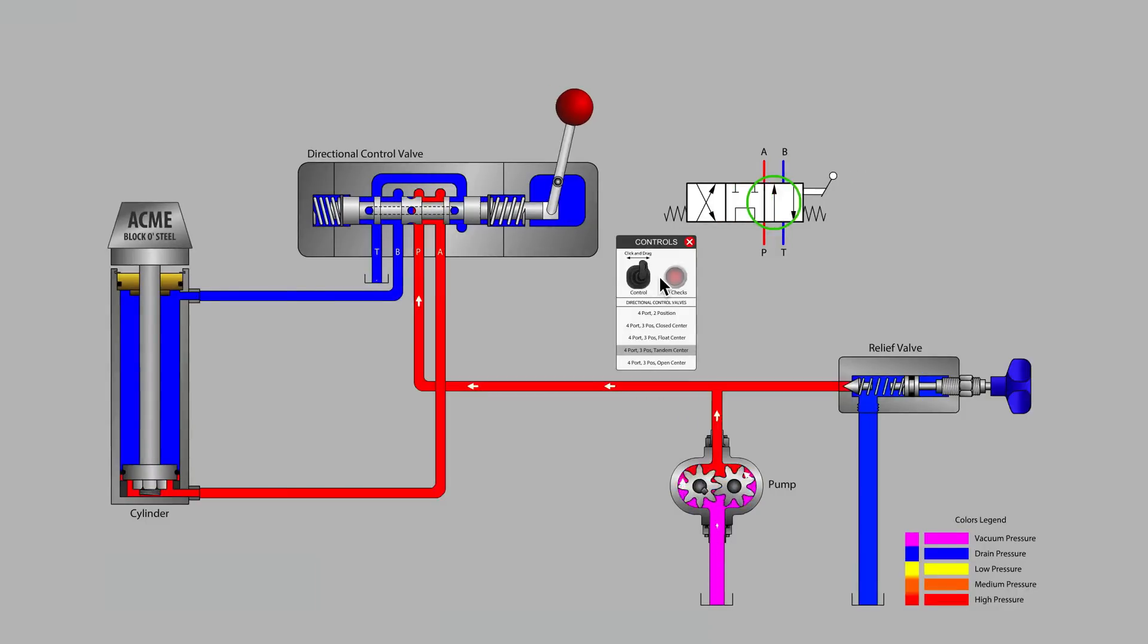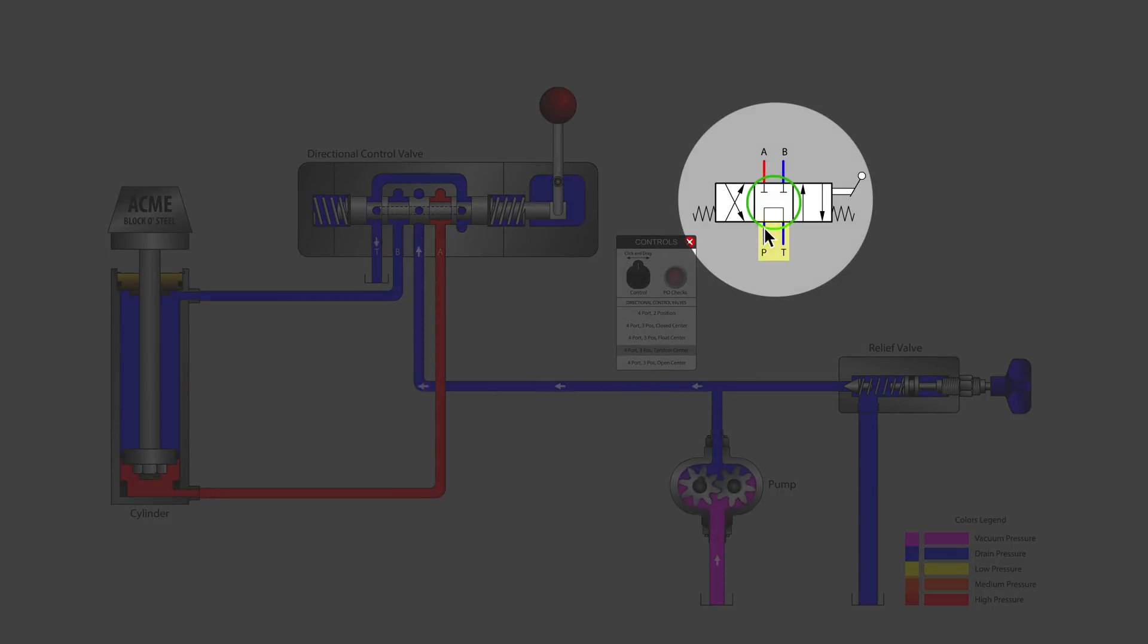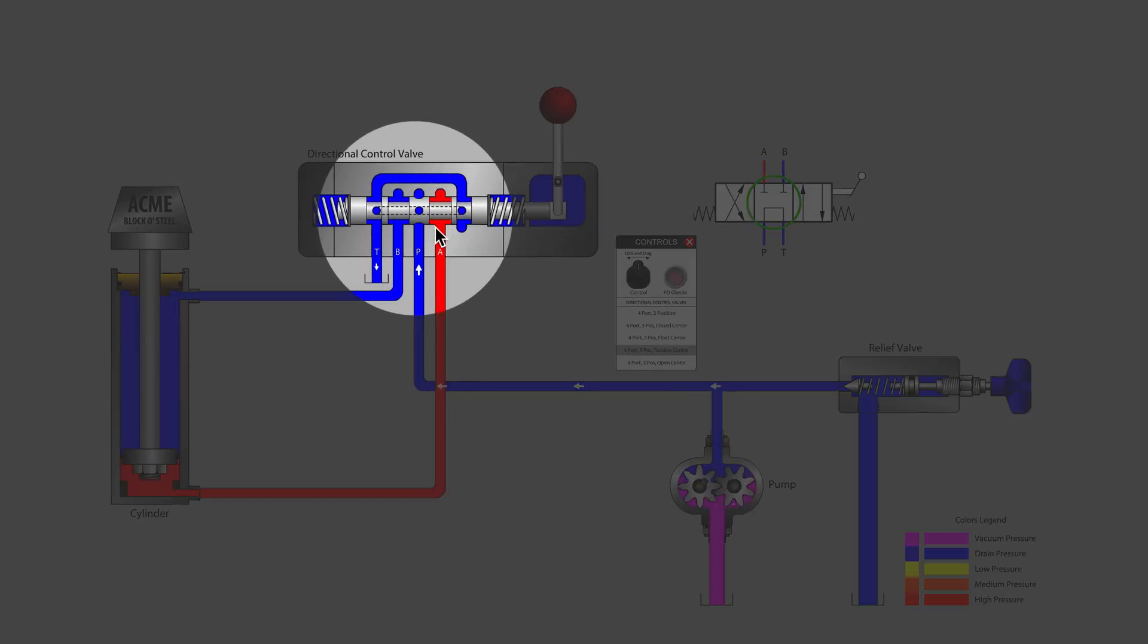Let's start with the tandem center valve. In the symbol, P is shown connected to T while the A and B workports are blocked. Looking at the cutaway, we see that the A and B workports are indeed blocked in the spool undercuts and that cylinder position holding is possible.